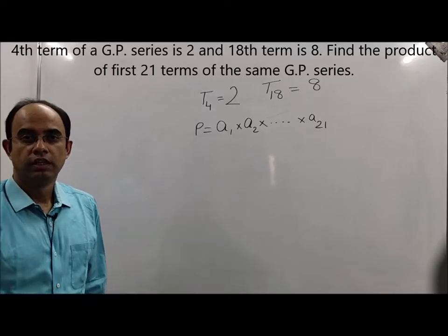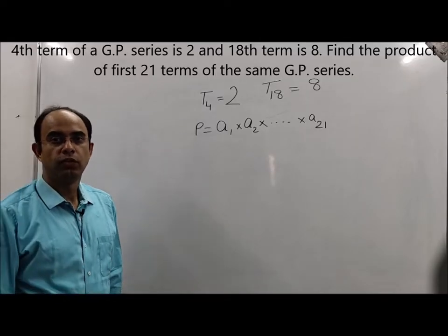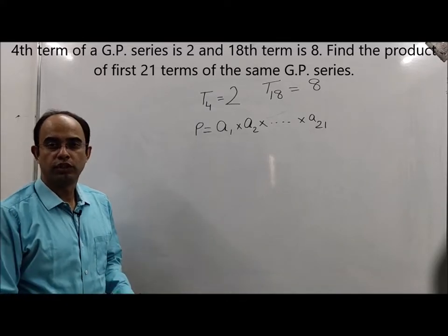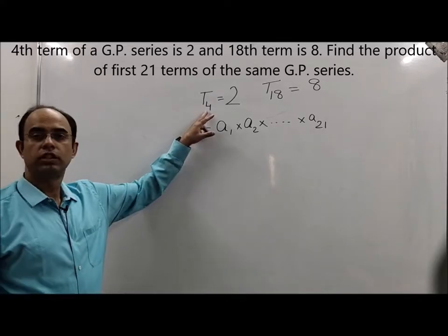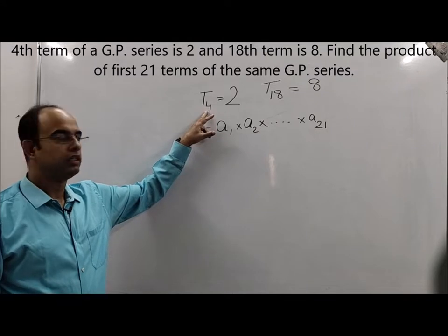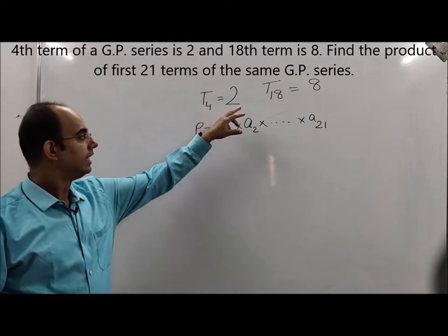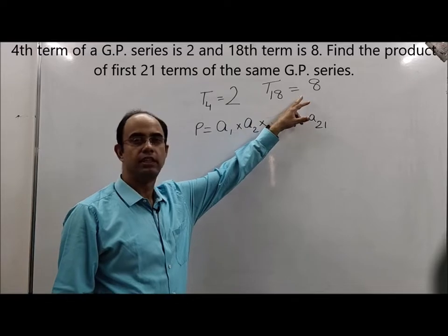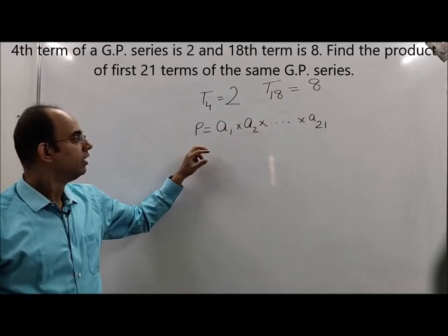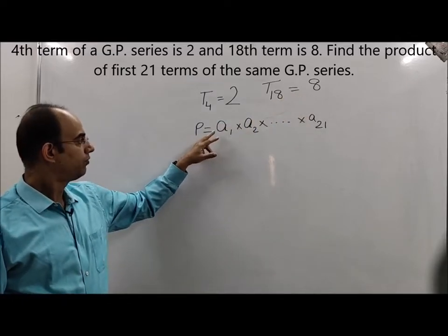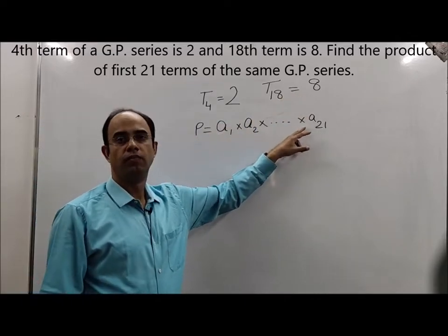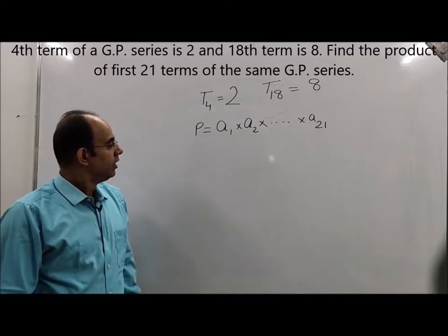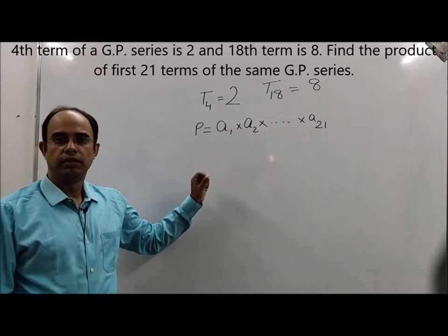Good morning students. Today we are going to solve a question on geometric progression. The question says that the fourth term of a GP series is 2 and the 18th term of the same GP series is 8. You need to find the product of the first 21 terms of the same GP series.